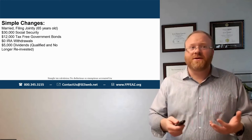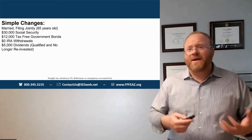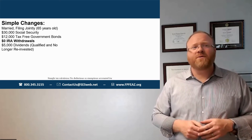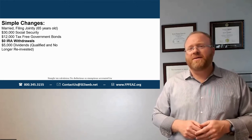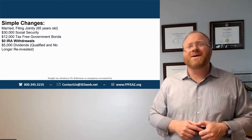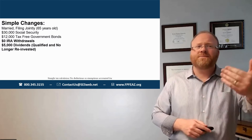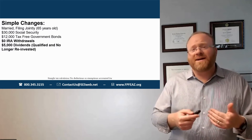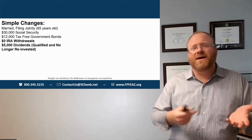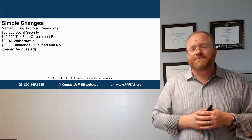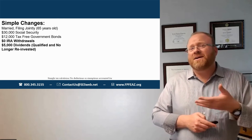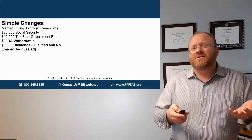Let's make a couple changes. I don't want them paying all this money in taxes — I want them as efficient as possible. What if we get rid of the IRA withdrawals? Let's just postpone that for now; I don't want to pay taxes on that IRA withdrawal. So I just reduced their income by $12,000. But rather, I want to take these dividends, turn them into qualified dividends, and make sure we receive them as part of our income paycheck. So I took away $12,000 but added $5,000 that we're going to start taking — effectively lowering their income.